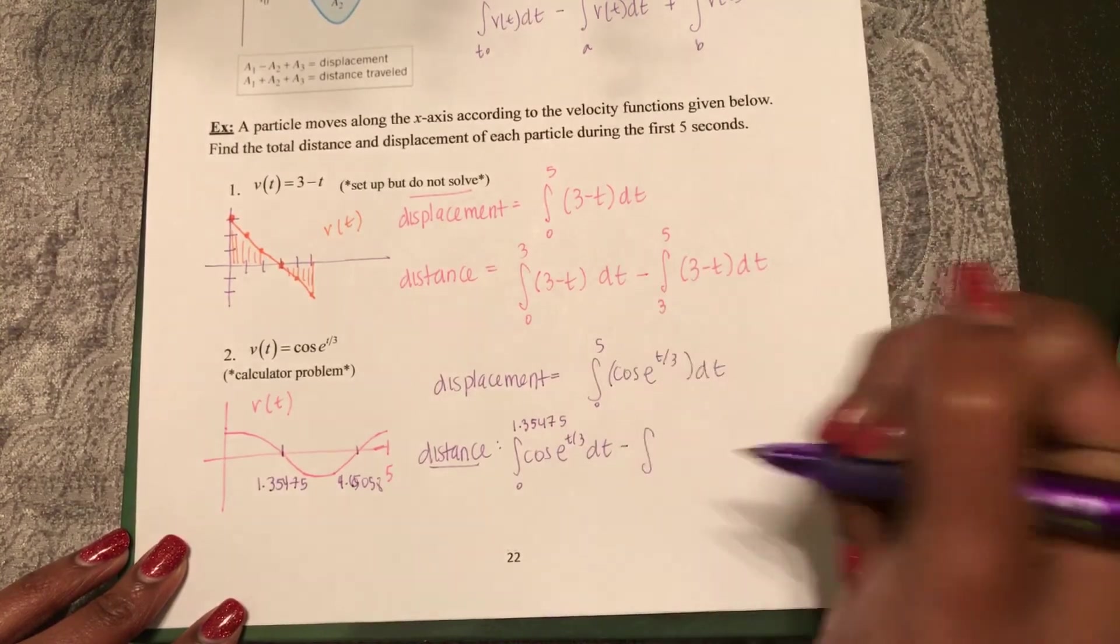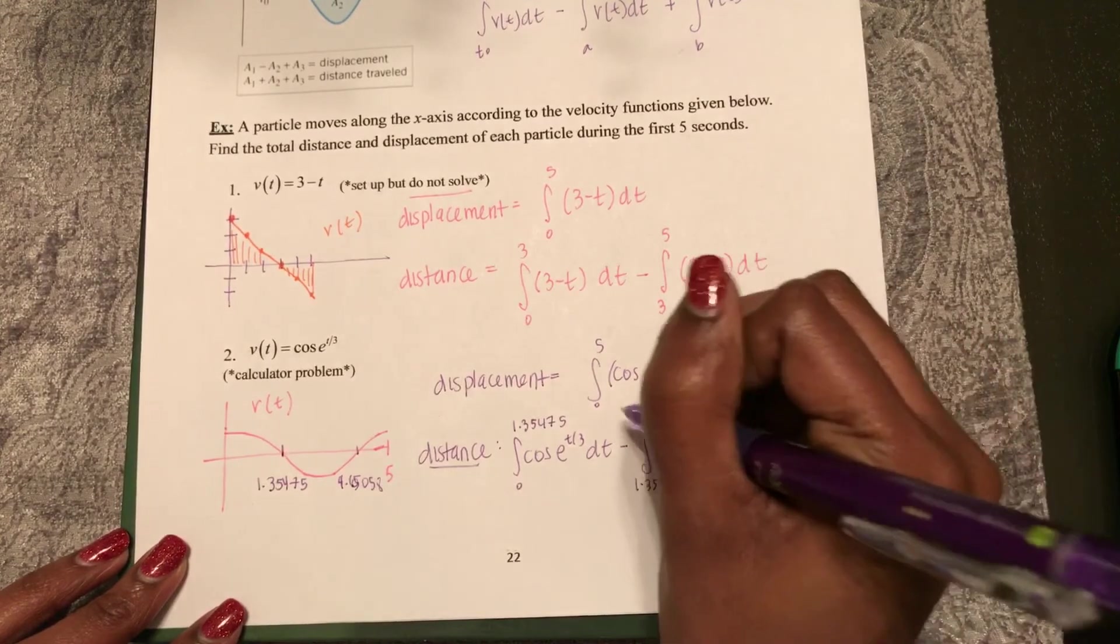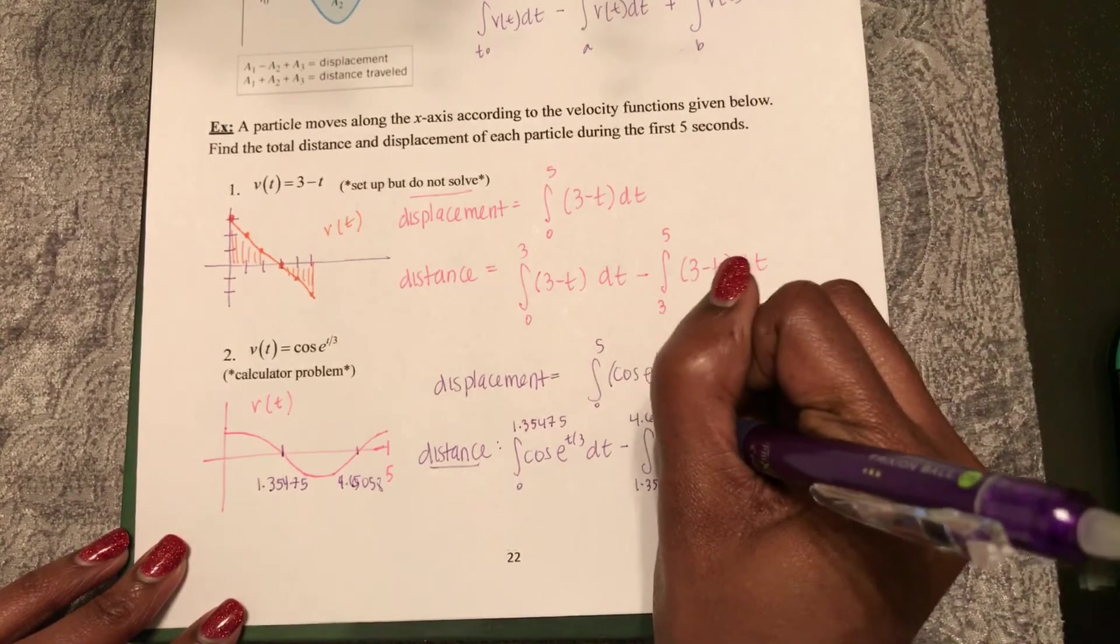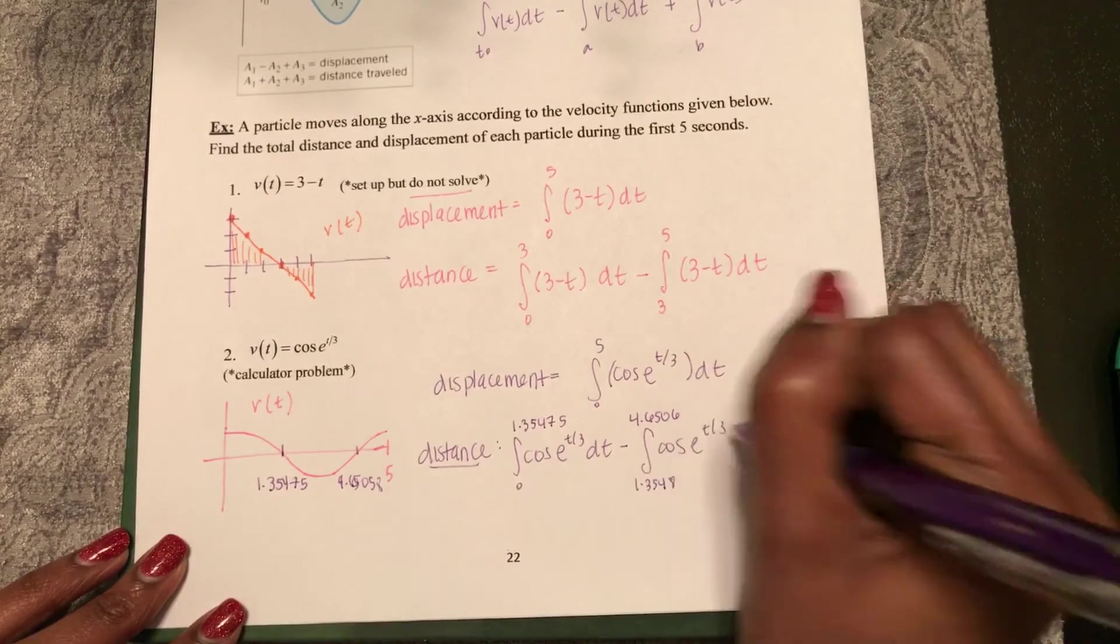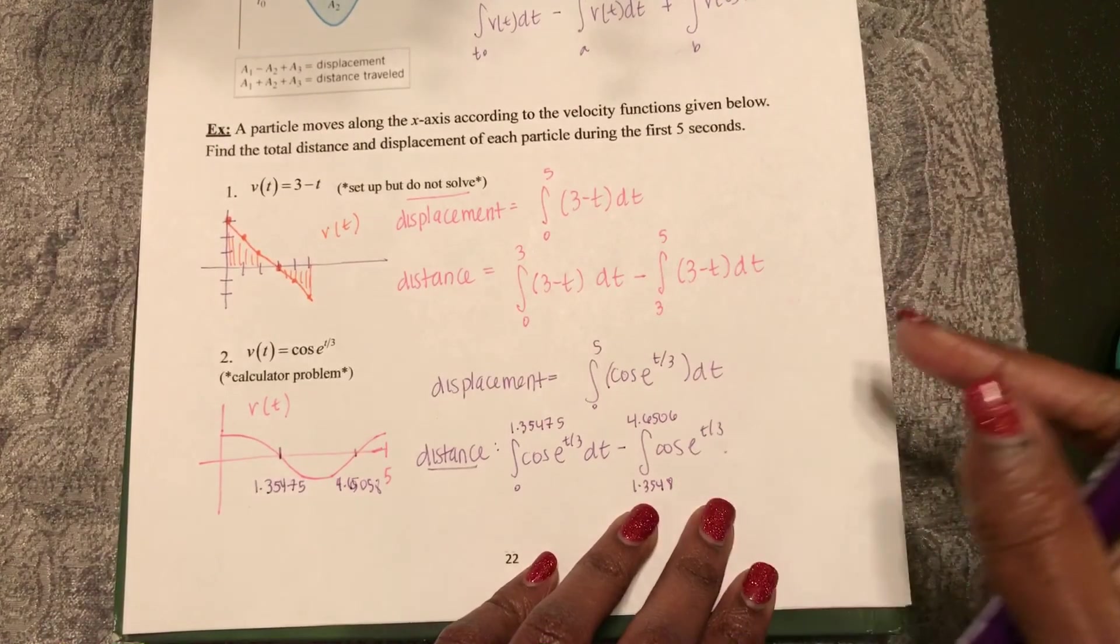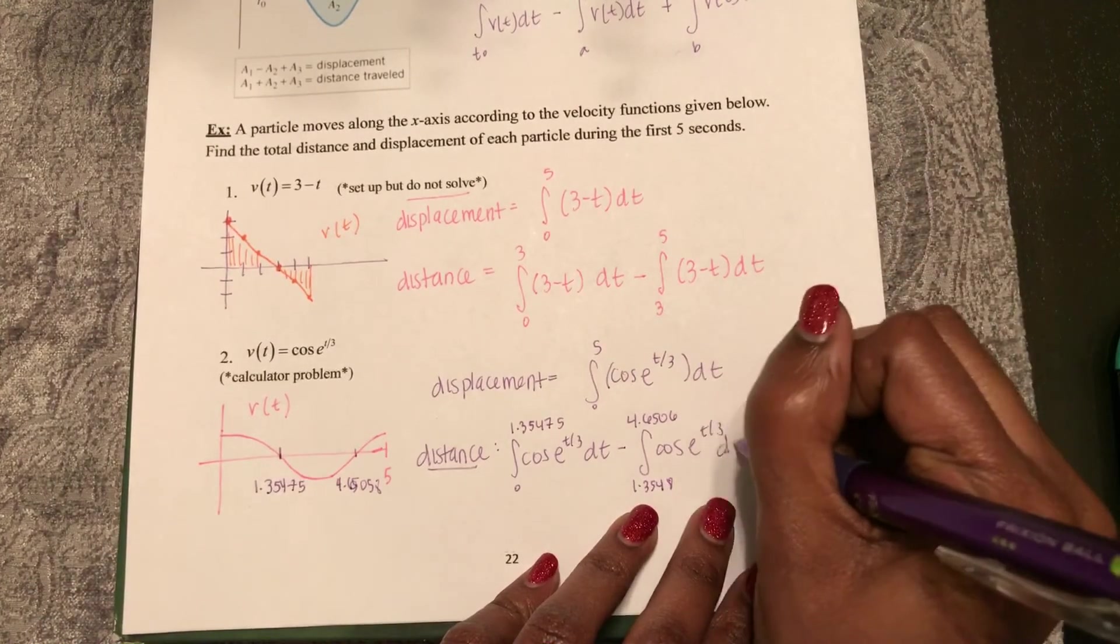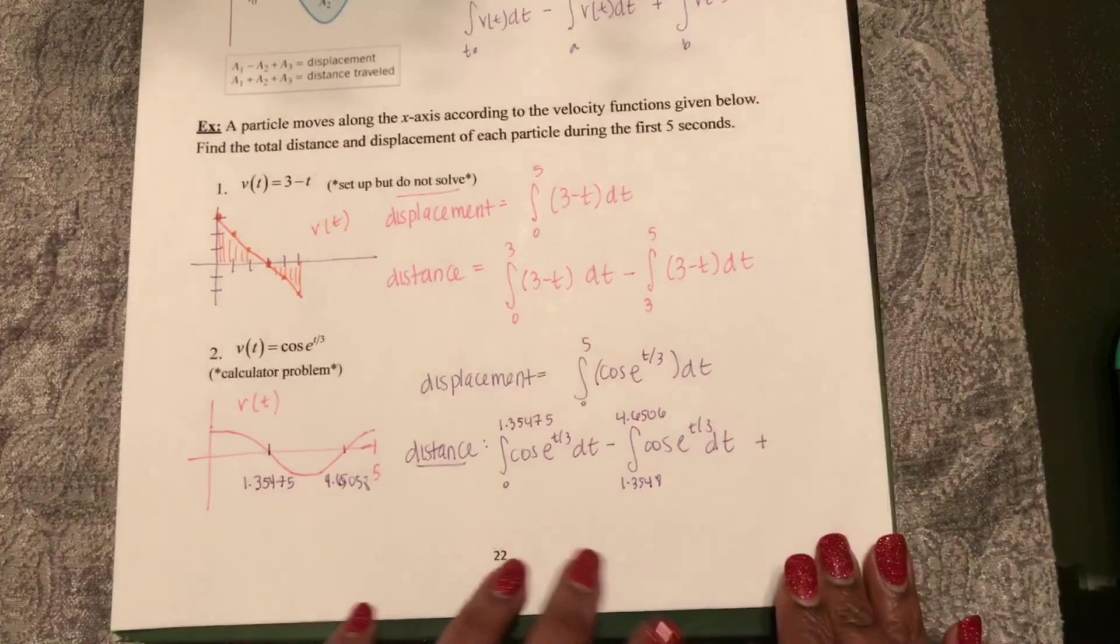Minus the integral from 1.354 to 4.6506 of cosine e to the t over 3. And then plus—oops, almost forgot my dt. Keep in mind, if you drop off your dt or your dx, AP graders will stop grading.